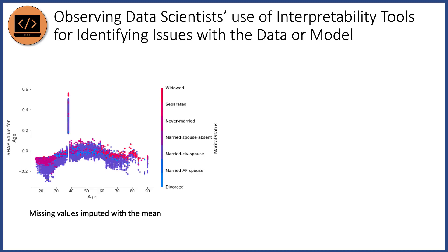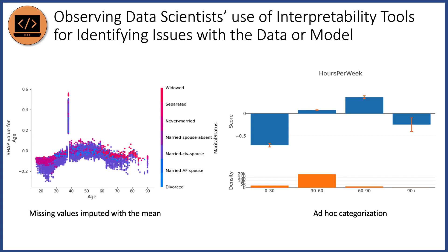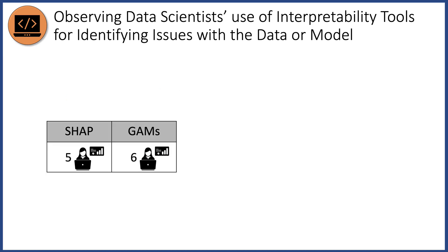For example, for the age chart, we imputed 10% of age values with the mean age in cases where the output was greater than $50K income. As a result, you can see the spike in SHAP value for age at the mean age value of 38. To synthesize ad hoc categorization, we converted the continuous variable representing hours worked per week into a categorical one based on arbitrary 30-hour intervals. We conducted these contextual inquiries for both kinds of interpretability solutions, using SHAP as a post-hoc explanation tool for black box models and GAMs as our glass box models.